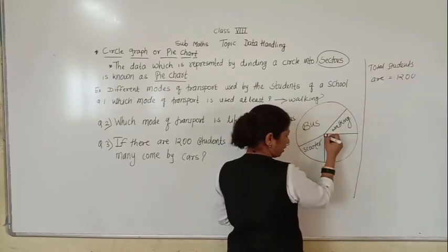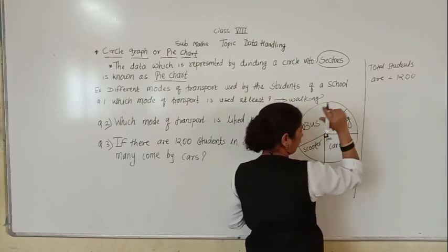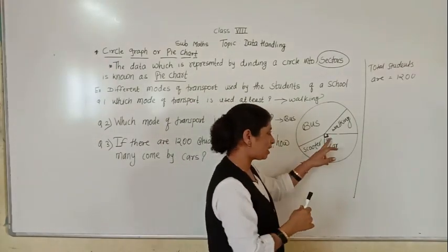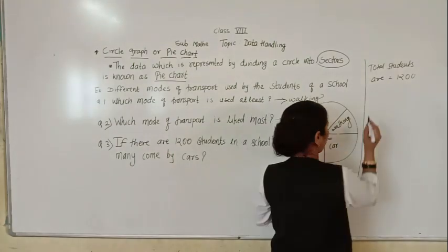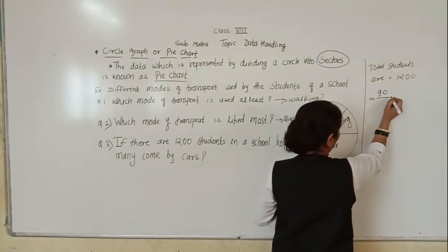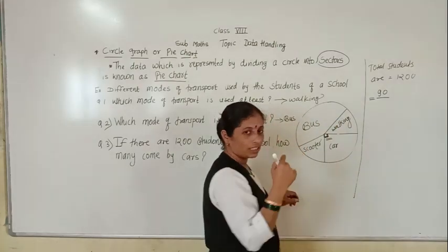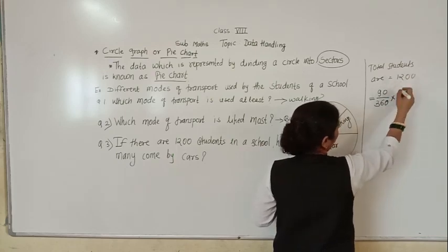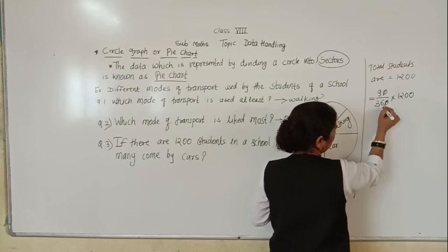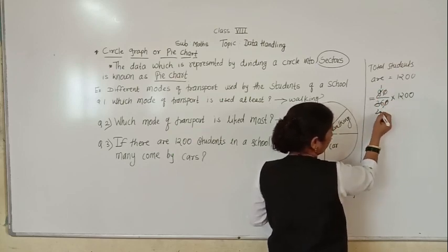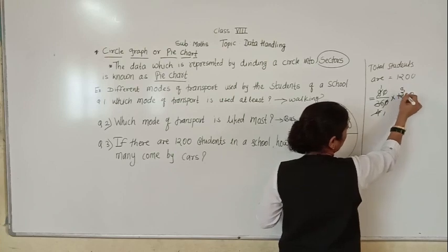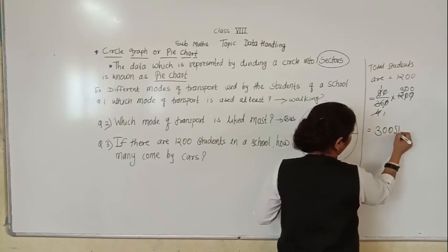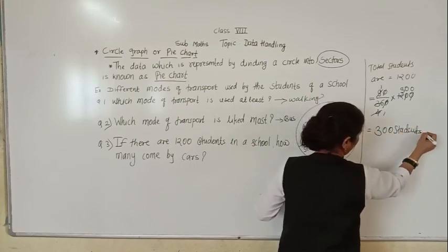To find the number of students going by car: the car sector has 90 degrees out of a total of 360 degrees in the circle, multiplied by 1200 total students. Calculating: 90/360 × 1200 = 1/4 × 1200 = 300. So 300 students come to school by car.